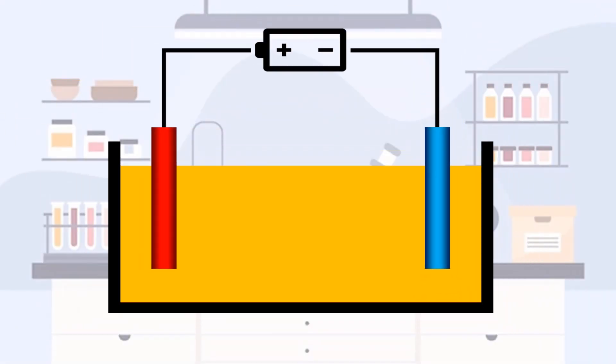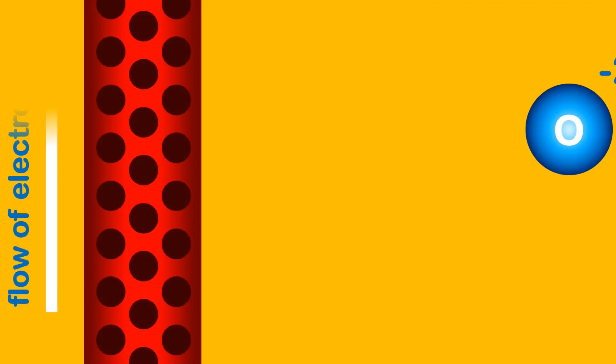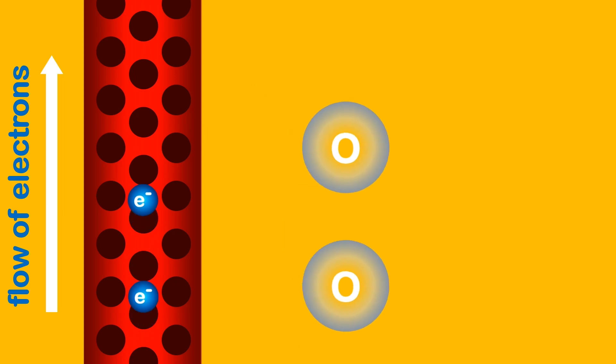But what happens when negative oxygen ions are attracted to the positive anode? Well, an oxygen ion loses two of its electrons to the anode and becomes a neutral oxygen atom. And because oxygen likes to be in pairs, it bonds with another oxygen atom to become a diatomic oxygen molecule.